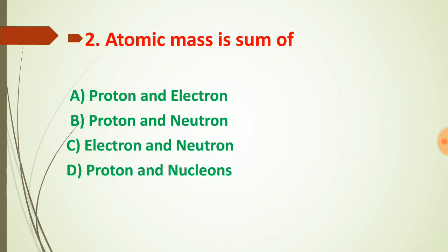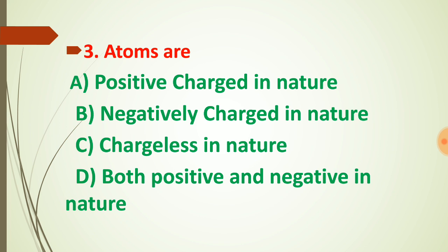Question number two: atomic mass. An atom contains electrons, protons, and neutrons, but electrons are so small that their contribution is neglected when calculating atomic mass. So atomic mass is the sum of protons and neutrons. Option D contains the term 'nucleons' — nucleons means protons and neutrons collectively — so atomic mass can also be called the mass number of nucleons.